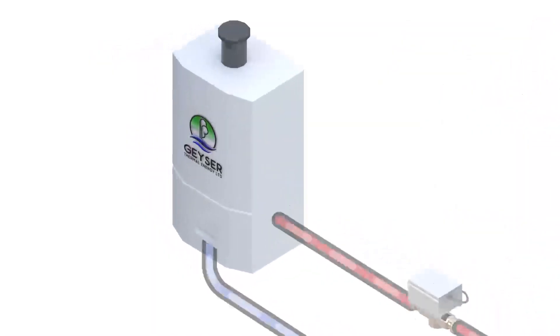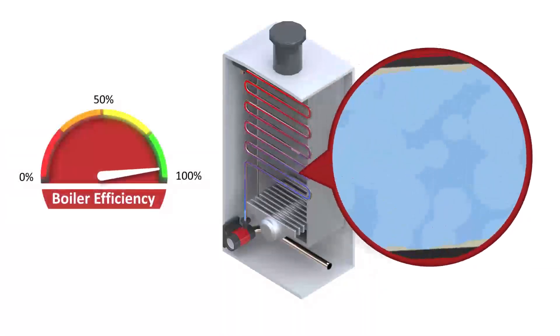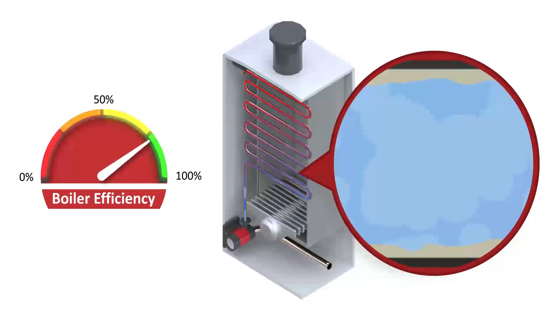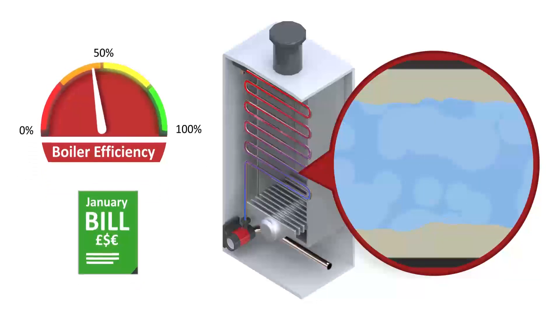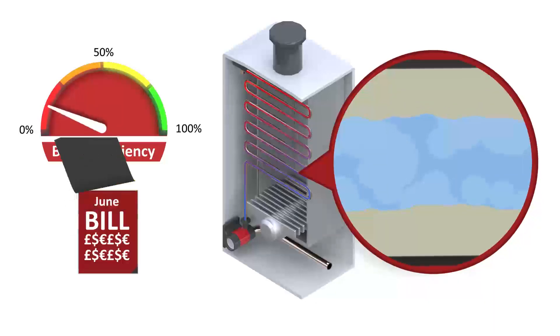A boiler has multiple components that are affected, including the heat exchanger, diverter valves and pumps. As scale builds up in a heat exchanger, the flow will reduce and its heat transfer capabilities will be diminished. This causes the output to be reduced and heating costs to rise until the boiler eventually fails.